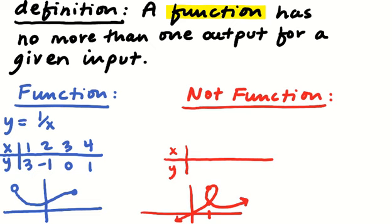Where you have one x but two different y's that go with it. For example, a table like x: 3, 2, 1, 0, 1 — see, x = 2 is going to both negative 1 and 1. That's not okay. That makes it not a function.